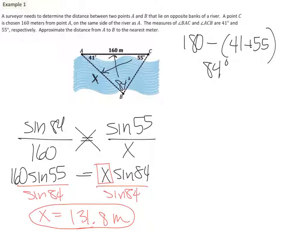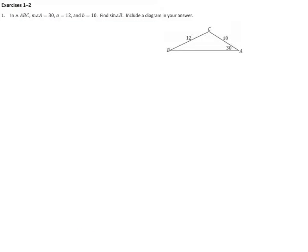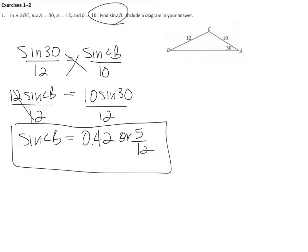Go ahead and try the next two on your own and check your answers when you're done. Try it on your own — I'm going to push pause. Notice how this question asked us to find sine of angle B. We didn't have to use the Pythagorean theorem to find the last side, because we can't — we don't have a right angle. So sine of angle B is 0.42.